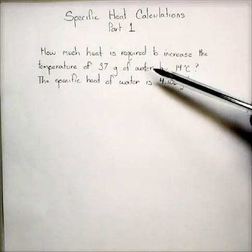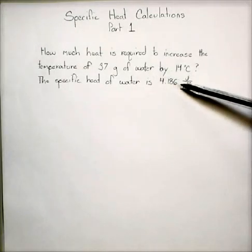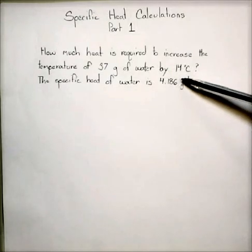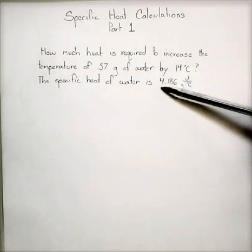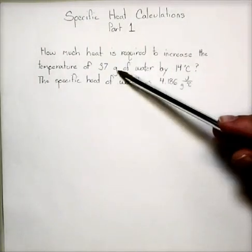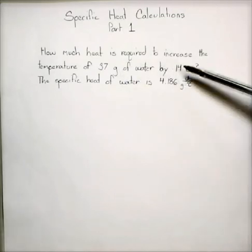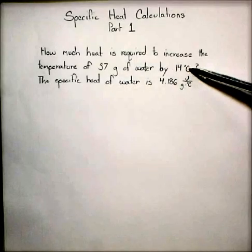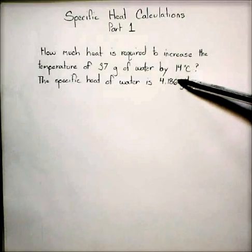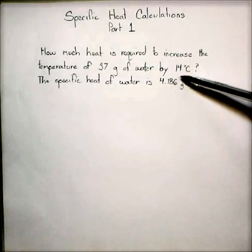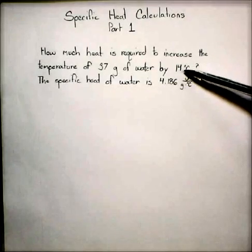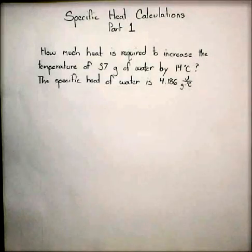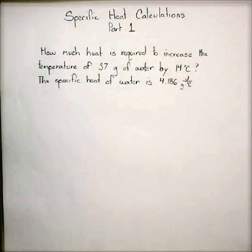So if I've got that 37 grams of water and I want to raise the temperature of each gram of that by one degree Celsius I need 4.186 joules for every gram. Also for every degree increase in temperature I need 4.186 joules for each one of those. And there's an equation that we'll see in just a second that will help us figure all that out without having to common sense it too much.